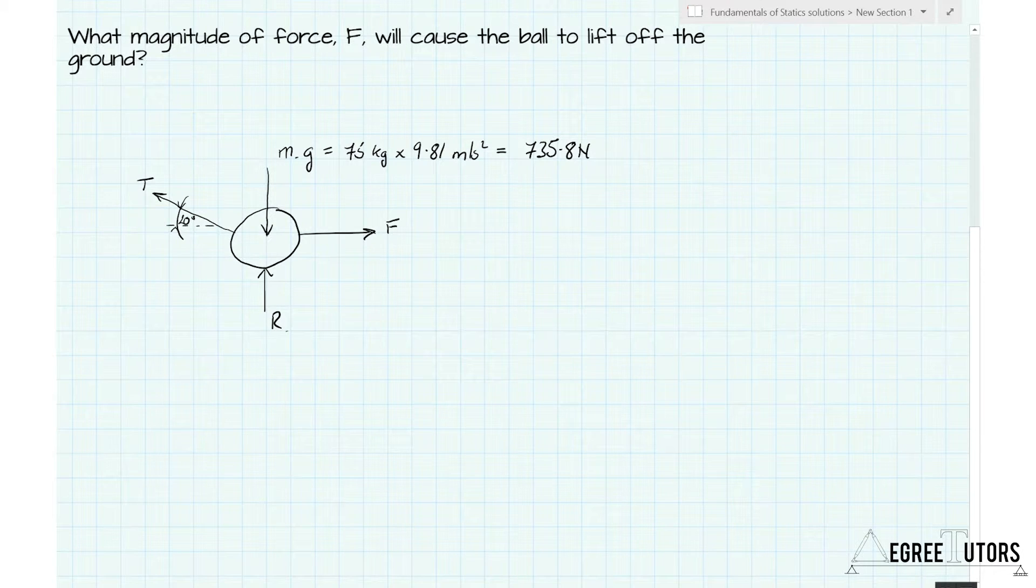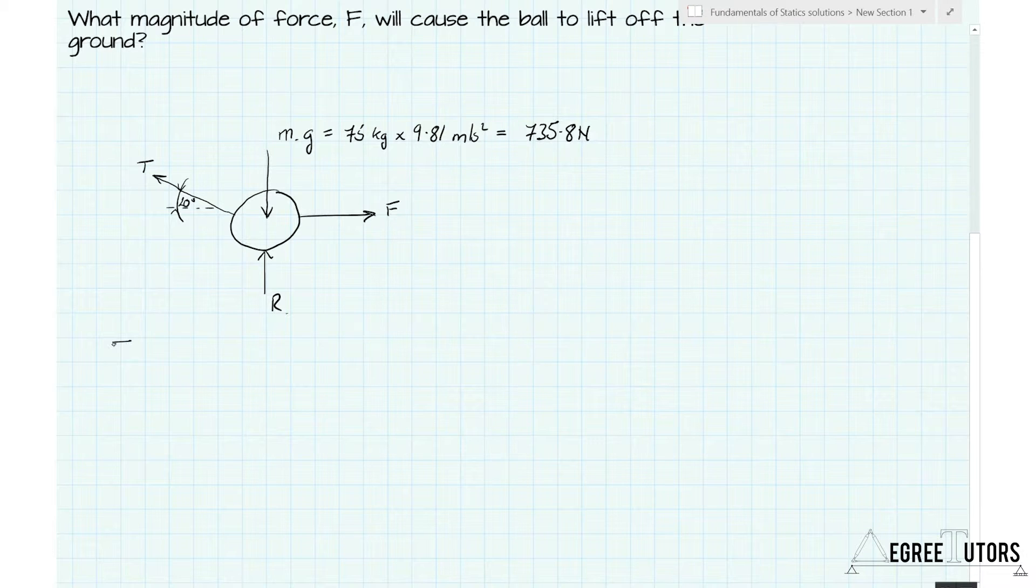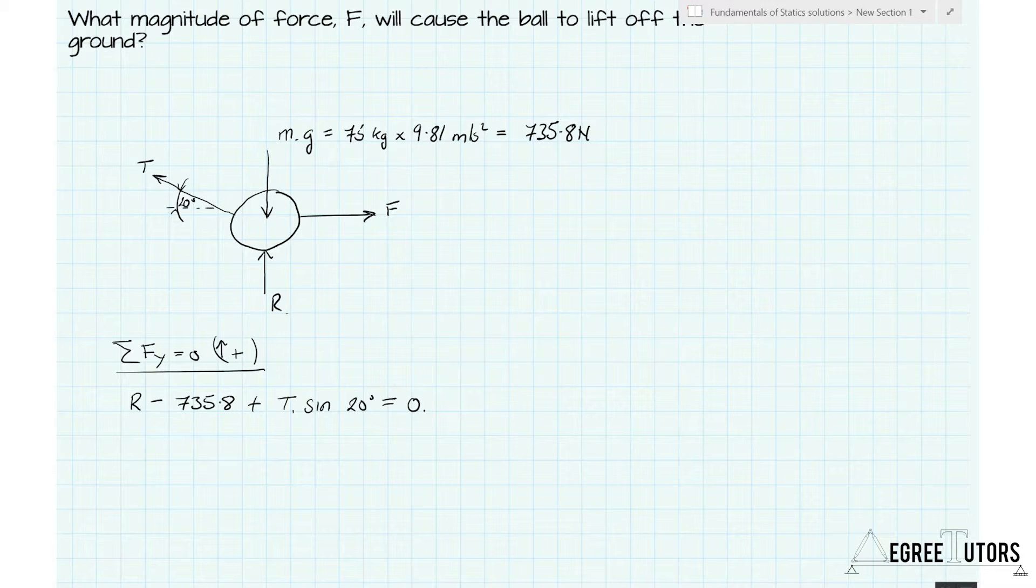Now we have a free body diagram, so the first thing we're going to do is evaluate force equilibrium in the vertical direction. So we can take the sum of the forces in the y direction must equal zero, and I'm going to assume upwards forces are positive. So what have I got? I have R minus 735.8 which is the self-weight plus the vertical component of the tensile force, so the tensile force is an inclined force and so it has a vertical component which is T times the sine of 20 degrees. Now all of that has to equal zero. So here's the trick: this is where we impose the condition that the reaction force R equals zero, because at the point at which the ball lifts off the ground, the reaction won't be exerting any force on the ground and therefore the ground won't be exerting any equal and opposite reaction force onto the ball. So let's impose that condition that essentially makes R equal to zero, and so we can say that T times the sine of 20 degrees must equal 735.8.